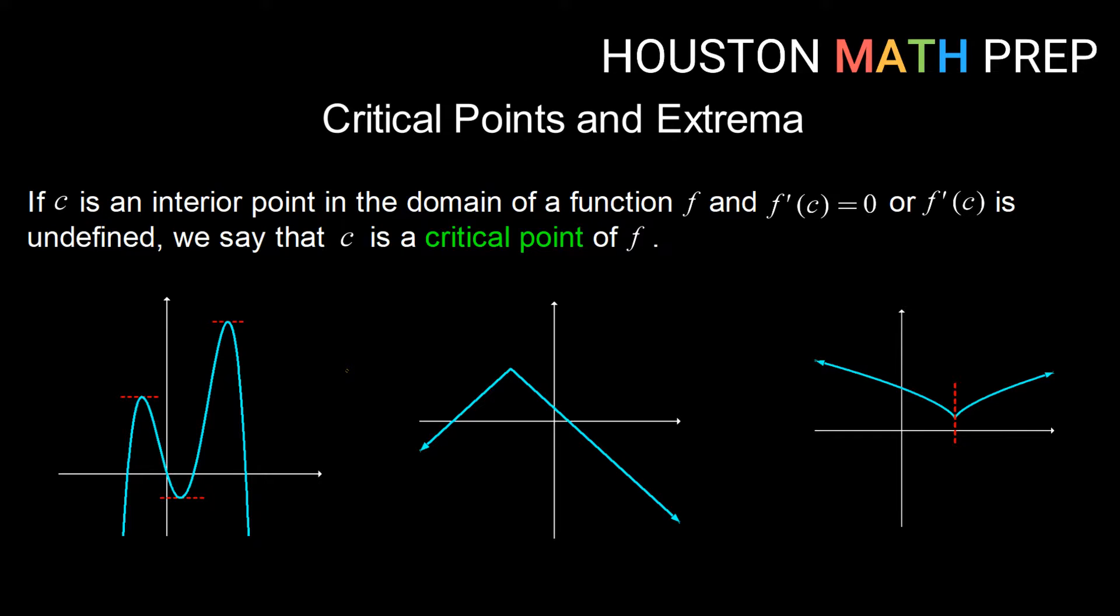So let's take a look at visually what these critical points would look like. Places where f prime of c is equal to zero is any place where we would get a horizontal tangent line, because the slope of a tangent line is a derivative, and a zero slope gives us a horizontal line. So we have tops of hills or bottoms of valleys.